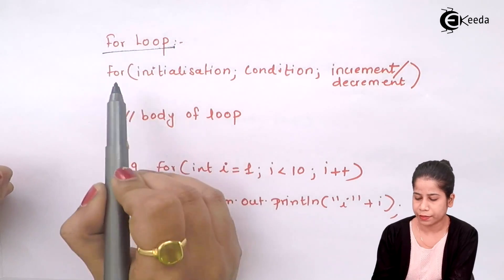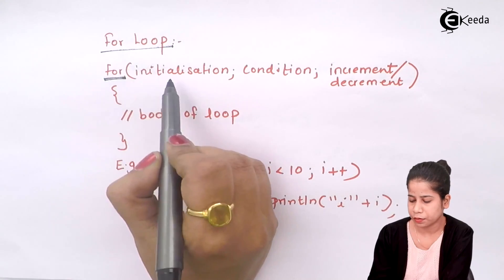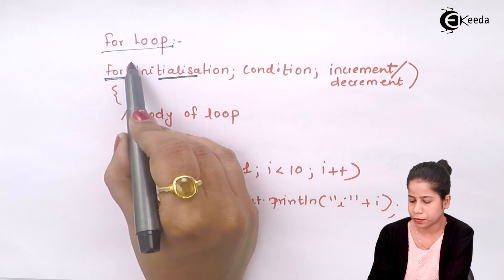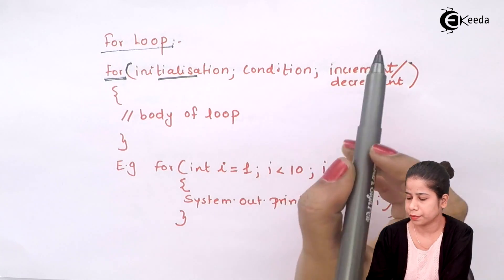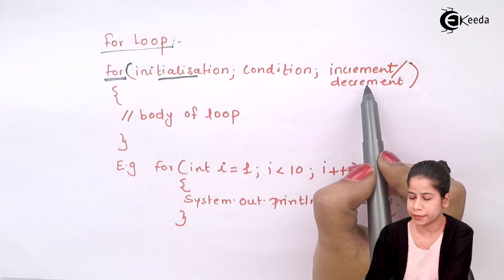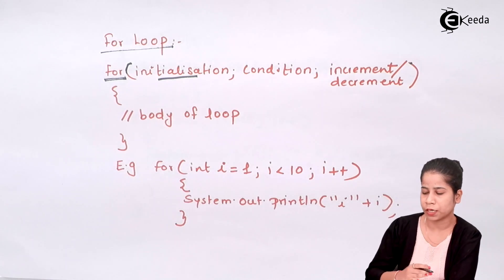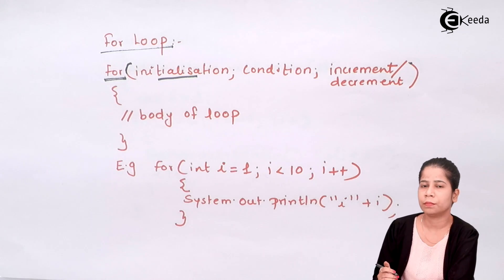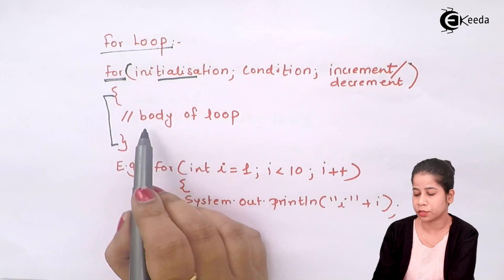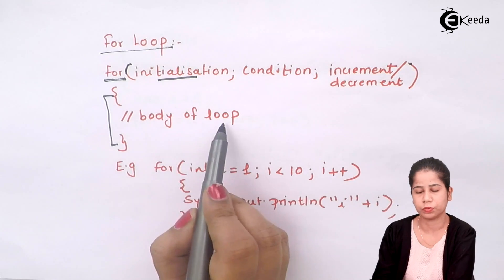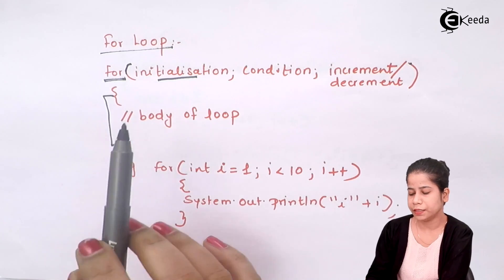To write a for loop: the keyword 'for' is used, followed by parentheses containing initialization, then condition, then increment/decrement — all in one line. Then you have curly braces which define the body of the loop, that is, the task you need to perform.